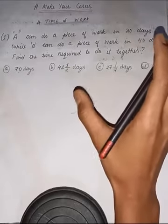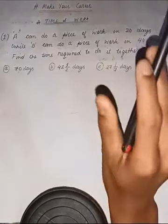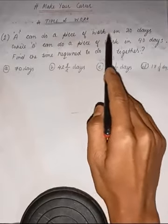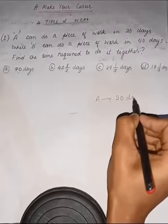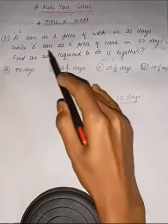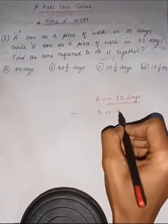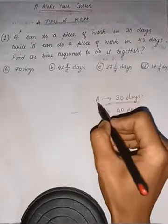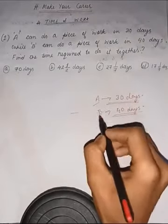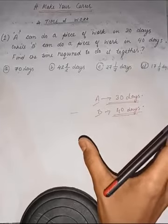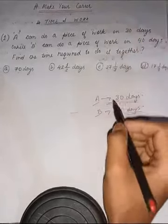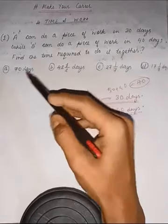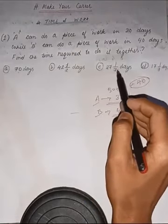Okay, so first question: A can do a piece of work in 30 days, while B can do a piece of work in 40 days. Find the time required to do it together. Options: B) 14 and 2/7 days, C) 27 days, D) 17 and 1/7 days.